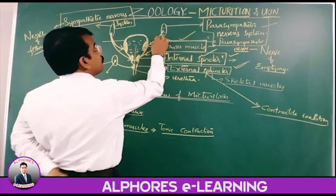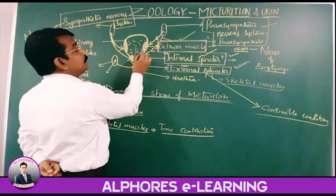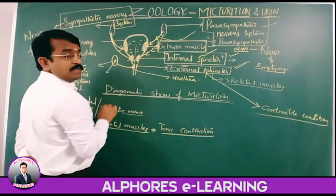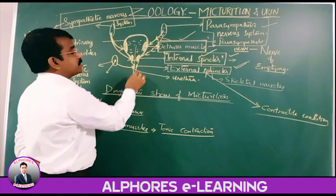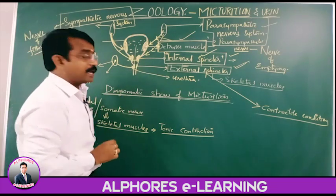During the time when the parasympathetic nervous system gives the signal to the detrusor muscles for contraction, and the internal sphincter for relaxation —